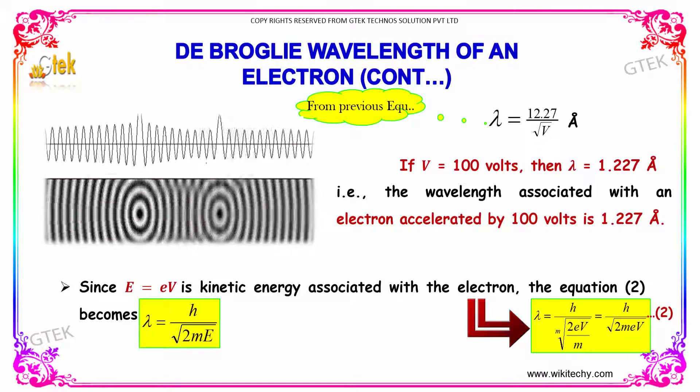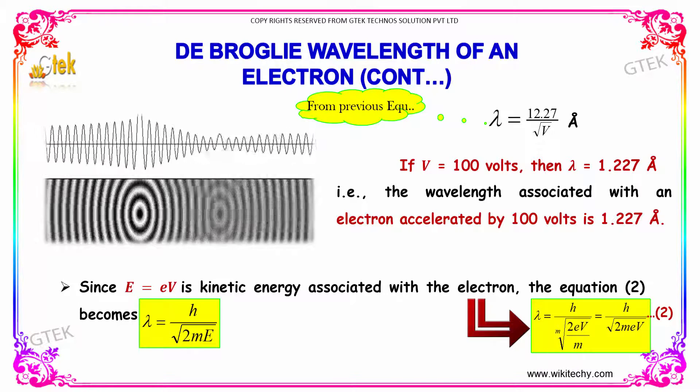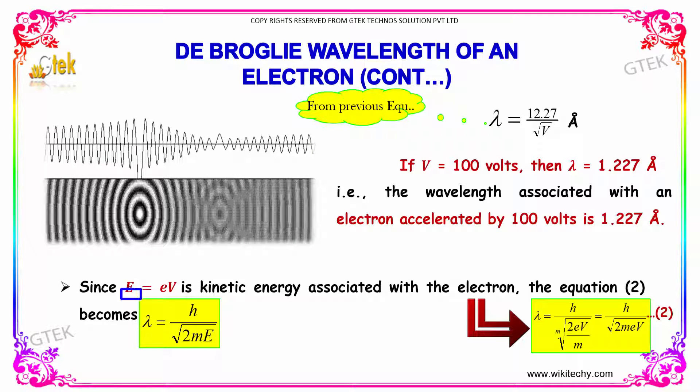Since E = eV is the kinetic energy associated with the electron, λ = h/√(2mE). This is the alternative form of the previous equation.